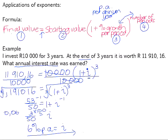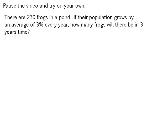There is an example for you to try on your own. There are 230 frogs in a pond. If their population grows by an average of 3% every year, how many frogs will there be in 3 years' time?